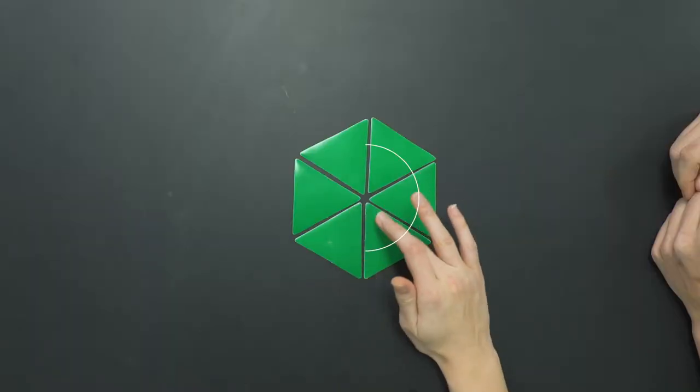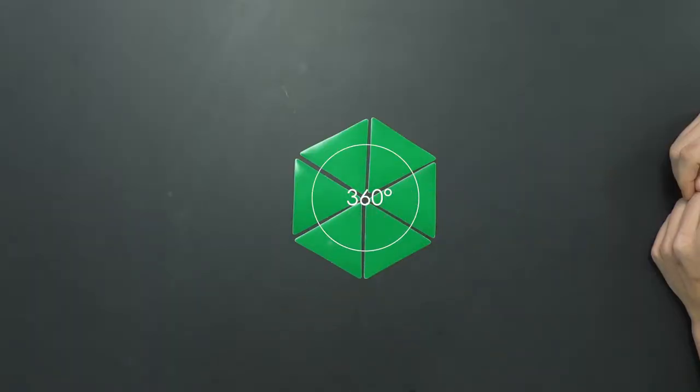Alright, so perfect. It looks like we can tessellate our regular triangles here. So I wonder then how we can use our knowledge of this 360 degrees around our point to prove why these triangles can tessellate. Okay. So with the internal angles again, we're going to look now at a regular equilateral triangle, which is what these are.